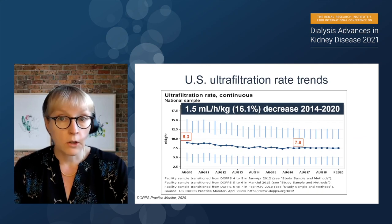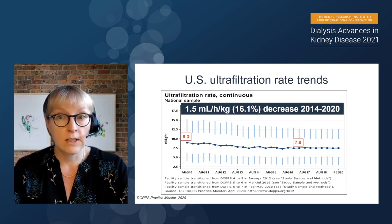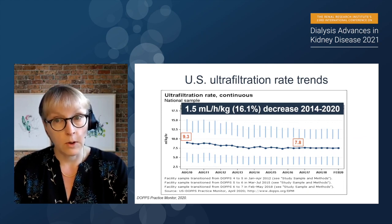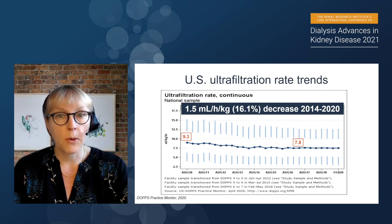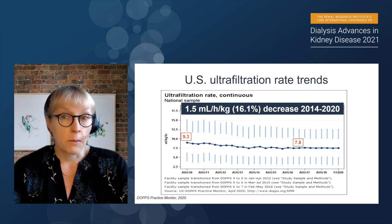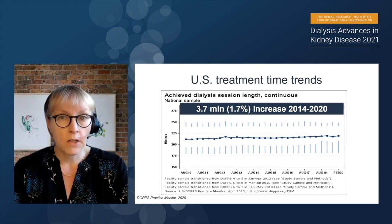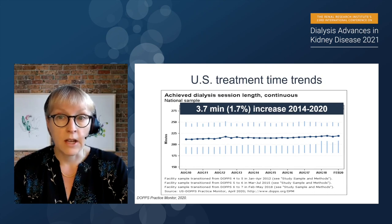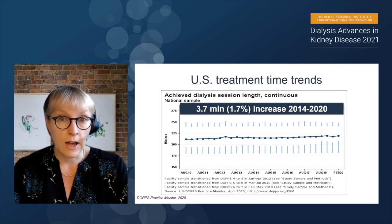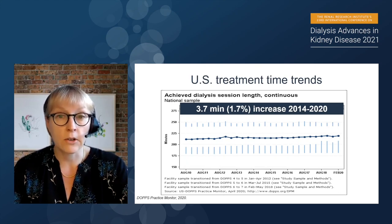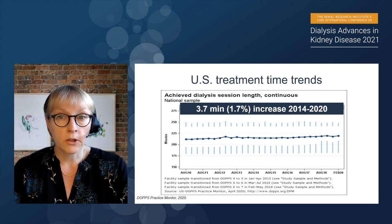Data from the DOPPS practice monitor from 2020 shows UF rate trends in the United States. In 2010, the average UF rate was 9.3 mLs per hour per kg. By 2017, that had dropped by 1.5 mLs per hour per kg to 7.8 mLs per hour per kg — a 16% decrease — and has been relatively flat for the last three years. In terms of population health management, a 16% decrease in ultrafiltration rates in a seven-year period is pretty remarkable.